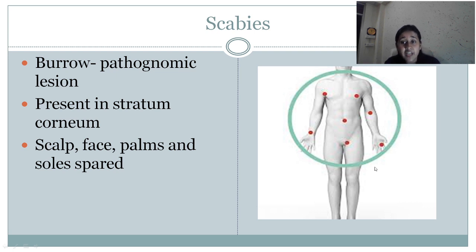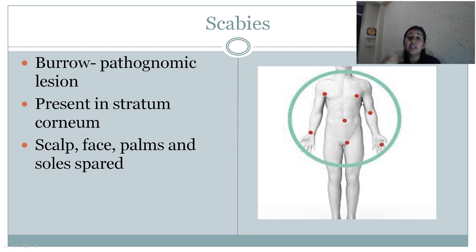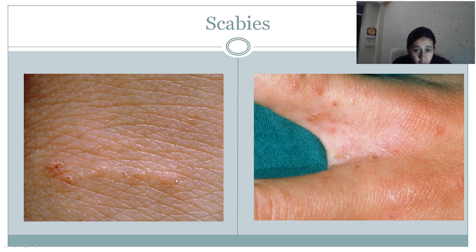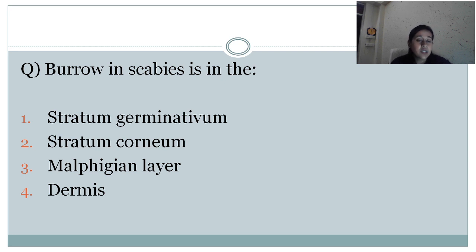The circle of Hebra shows the most common sites for scabies lesions: peri-umbilical area, groin region, finger webs, over the elbow, and over the axilla. Itching is more at night. This is an example of a burrow at the stratum corneum level. Question: burrow in scabies is seen in — stratum germinativum, stratum corneum, Malpighian layer, or dermis? The answer is stratum corneum.